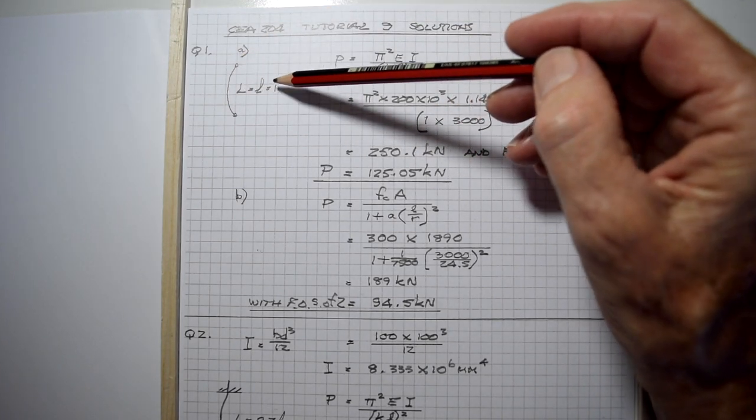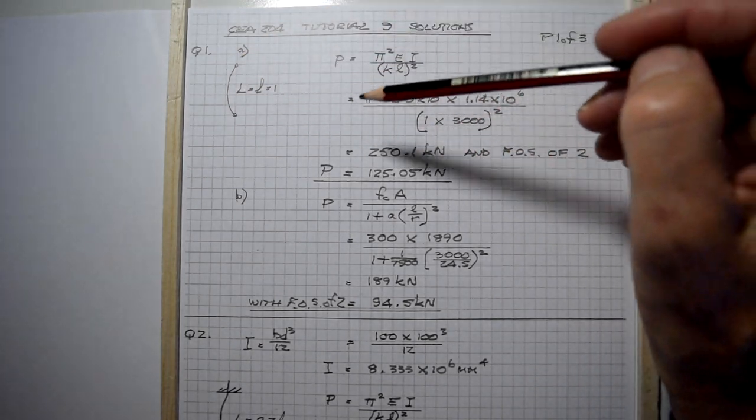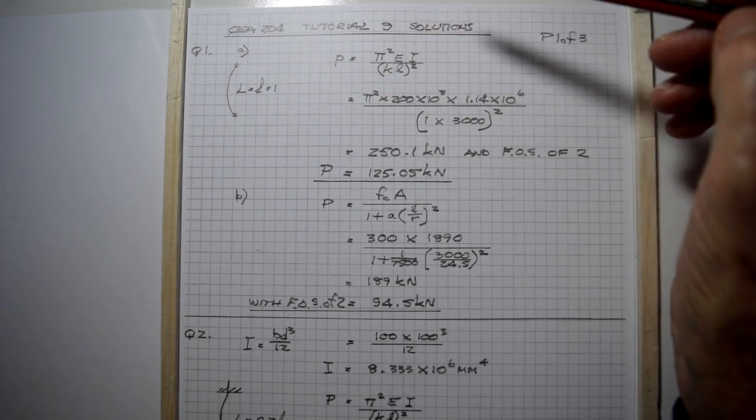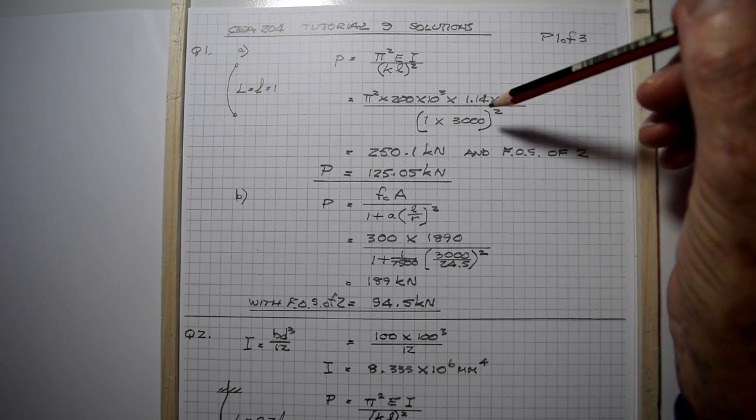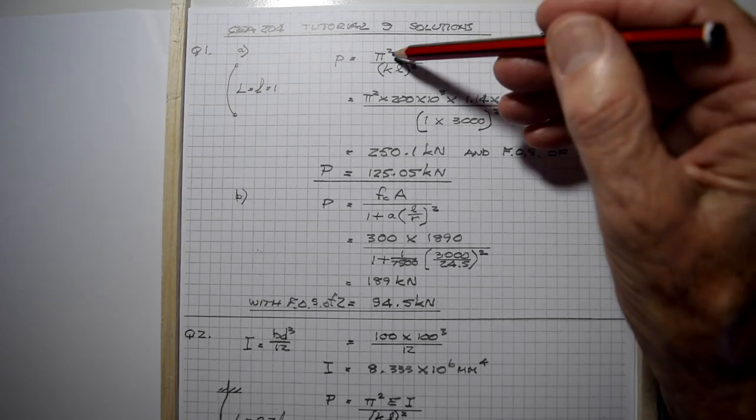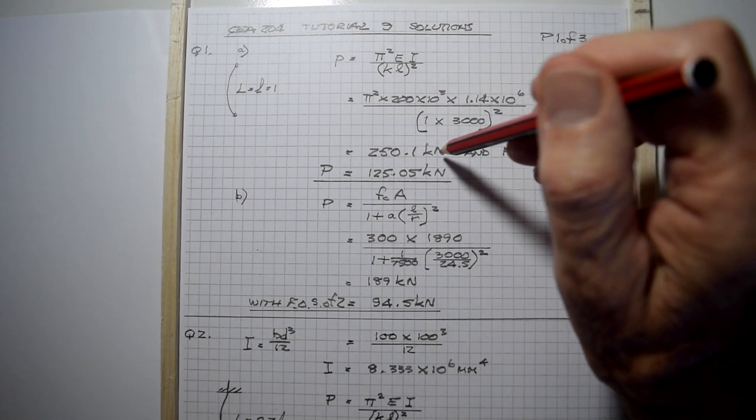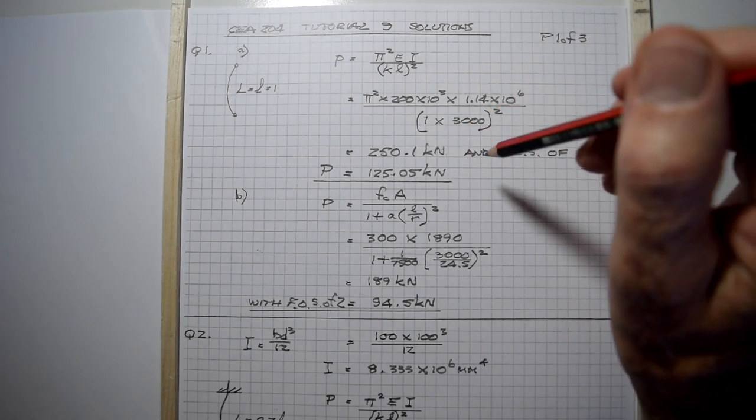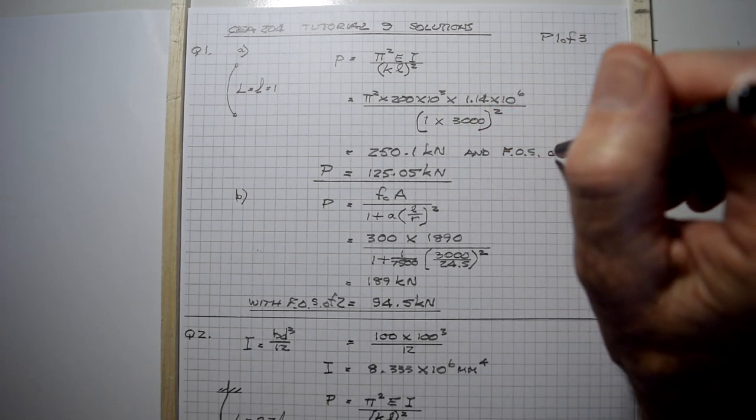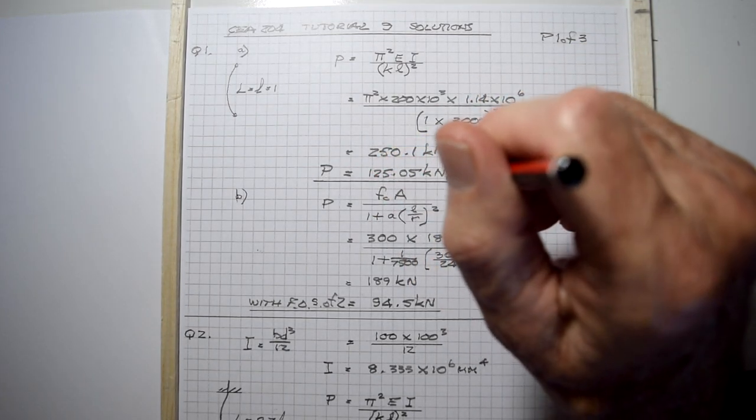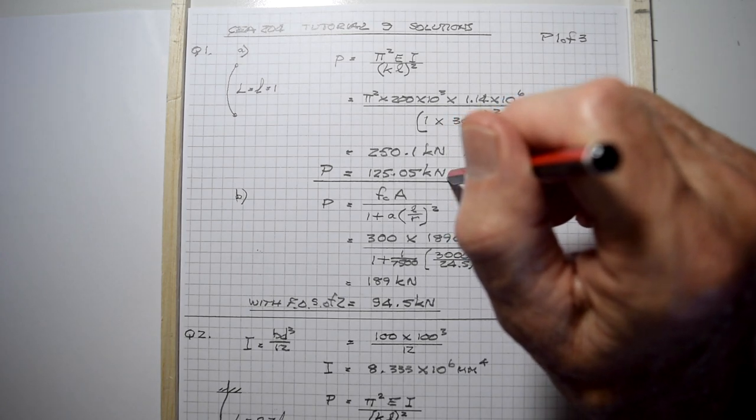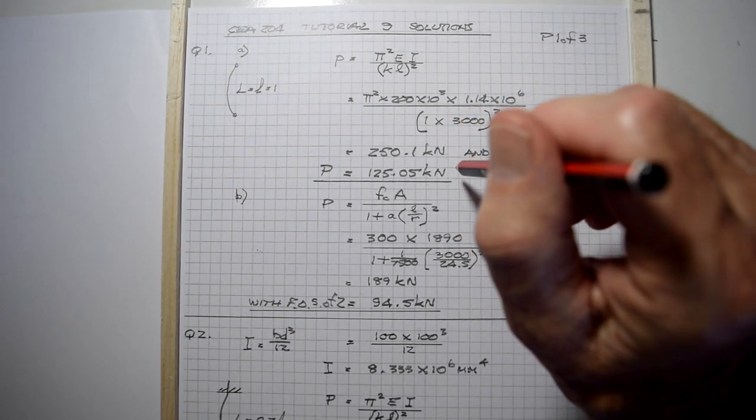From the table showing end fixity conditions for struts, we can carry a load of 250.1 kilonewtons. With a factor of safety of two, we divide by two, so the safe load is 125.05 kilonewtons.